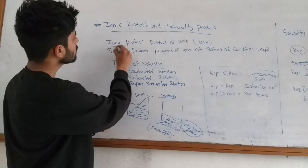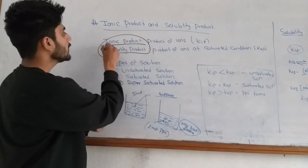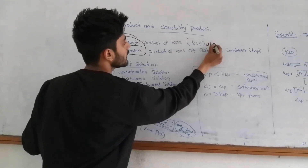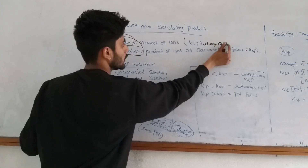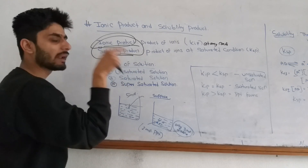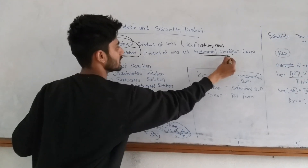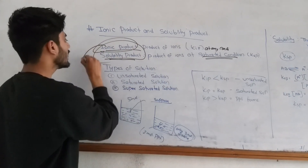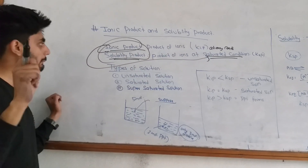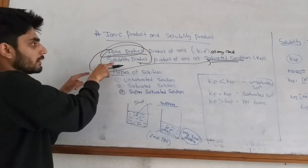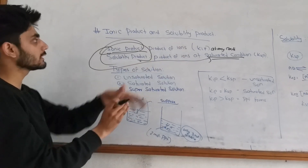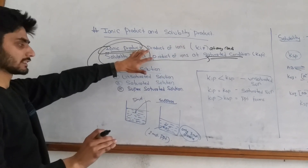Ionic product is the product of ions at any condition. Solubility product — it is mandatory to be at saturated condition. Any ionic product at saturated condition is solubility product. Remember: solubility product is at saturated condition. If you have any condition, it can be ionic product.